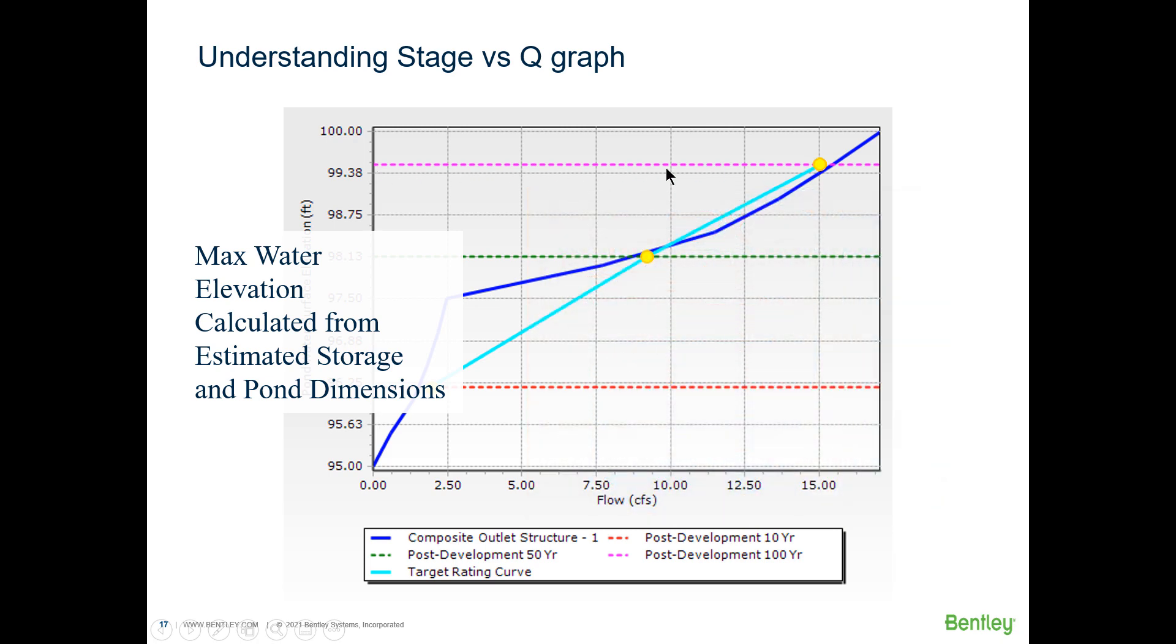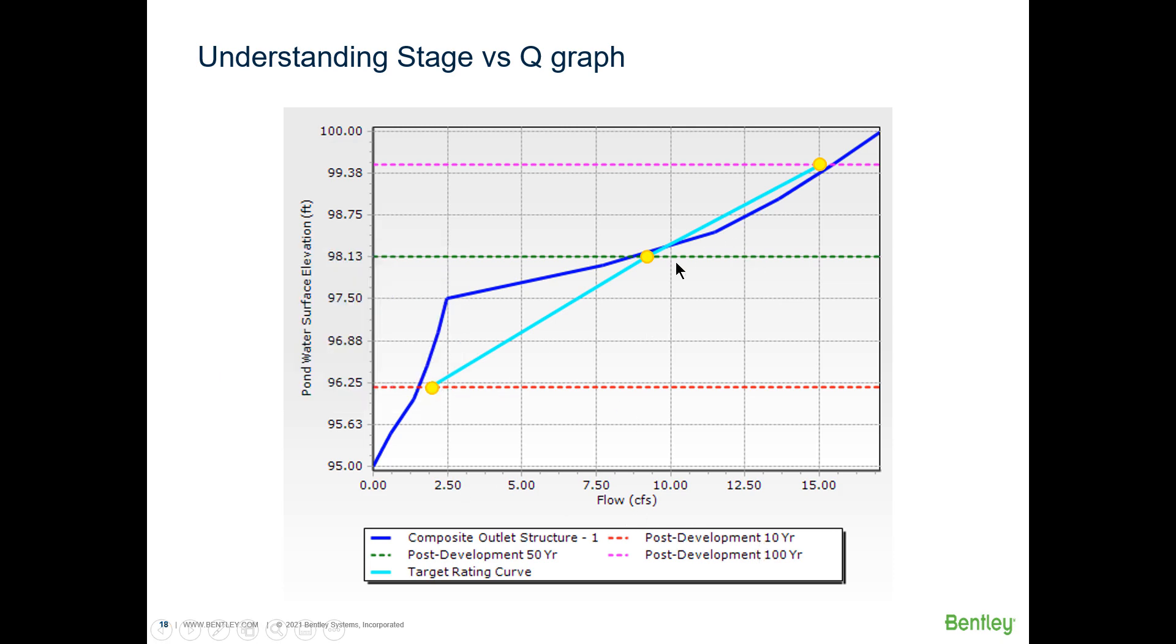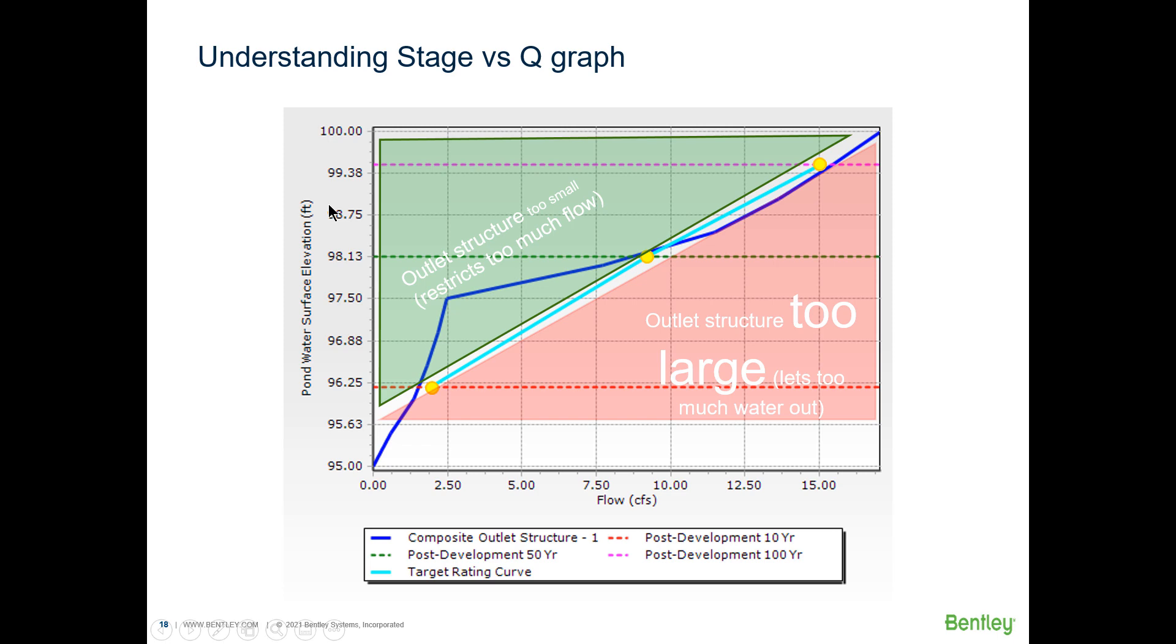Those are the dotted pink green and red lines. So at these intersections it basically puts a point and then it just interpolates and that's how we come up with that target line. Now that we understand the importance of our cyan line, that target rating curve, we can see how if we deviate towards the red zone the outlet structure that we're designing is too large. We would be letting too much water out and exceeding our target flow rates. But also if we deviate towards the green zone the outlet structure would be too small and we'd be restricting too much flow. You don't have to be really really close. There's usually a tolerance like plus or minus 10 percent of the target flow rates.